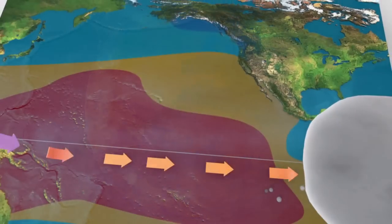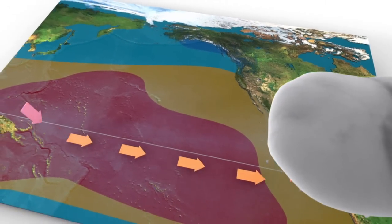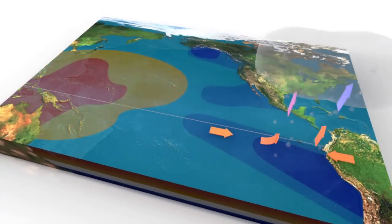During El Niño, unusually weak trade winds send a mass of warm water from the western side of the Pacific Ocean towards the east.